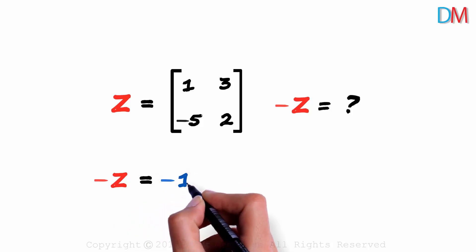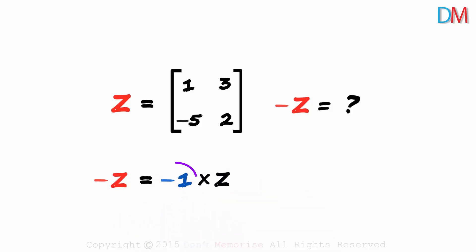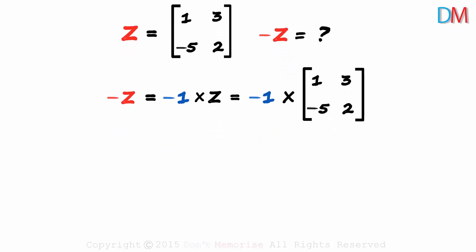Minus Z can be written as minus 1 multiplied by Z. We are multiplying a matrix with a constant, and this is a classic case of scalar multiplication. It's equal to minus 1 multiplied by this matrix Z. Let's shift the camera a bit and write down the resulting matrix underneath.